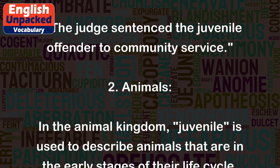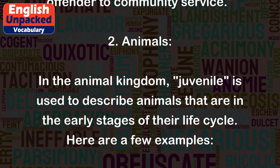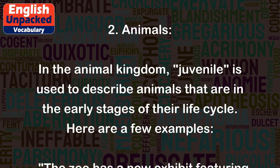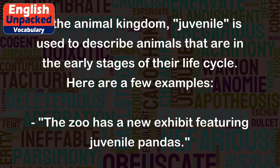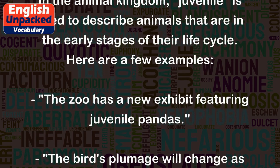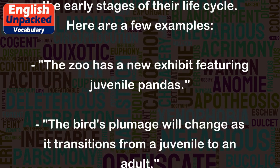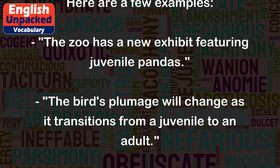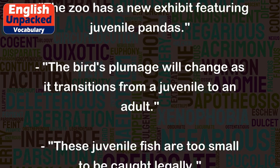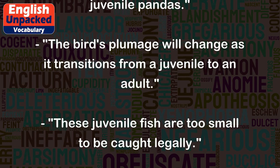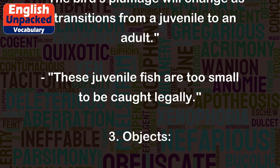2. Animals. In the animal kingdom, 'juvenile' is used to describe animals that are in the early stages of their life cycle. Here are a few examples: the zoo has a new exhibit featuring juvenile pandas. The bird's plumage will change as it transitions from a juvenile to an adult. These juvenile fish are too small to be caught legally.